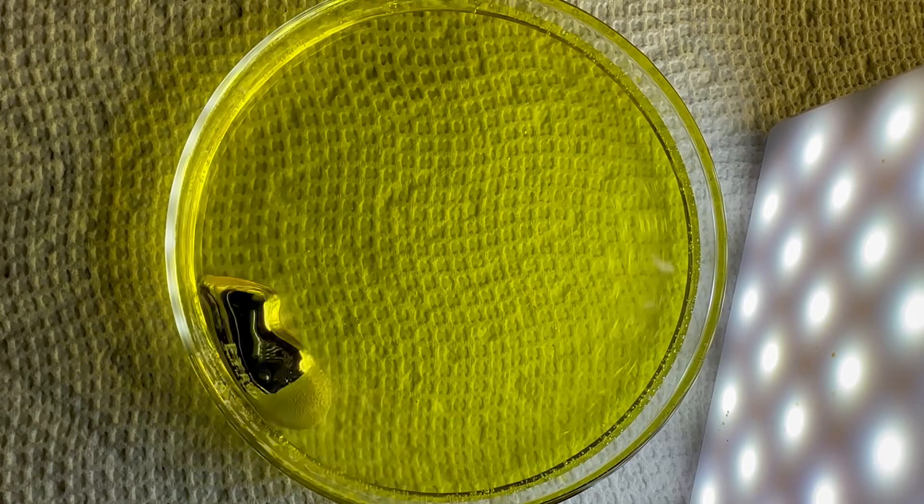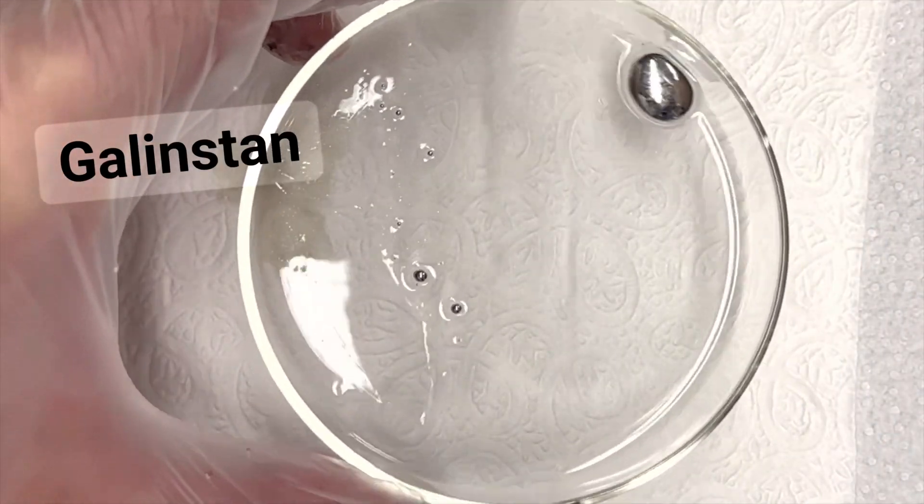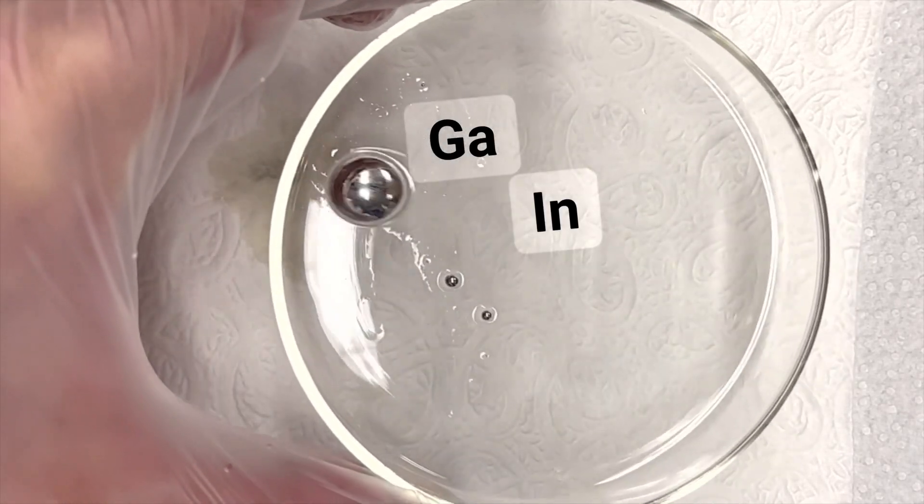Squirt's story begins when I started doing some experiments with Galenstan, which is a liquid metal. Galenstan is an alloy of the chemical elements gallium, indium, and tin.